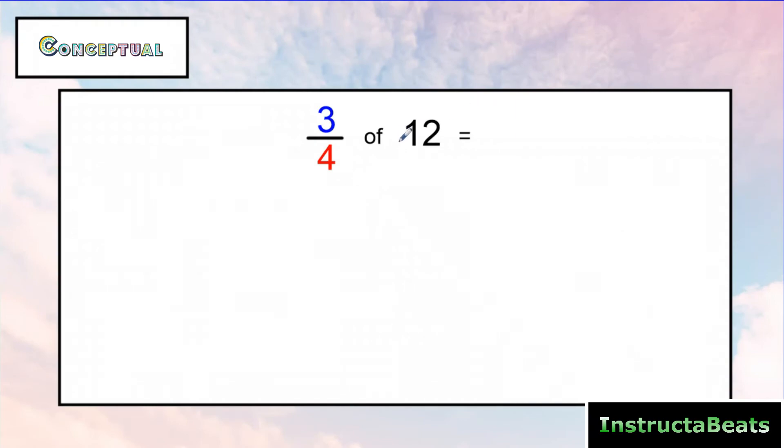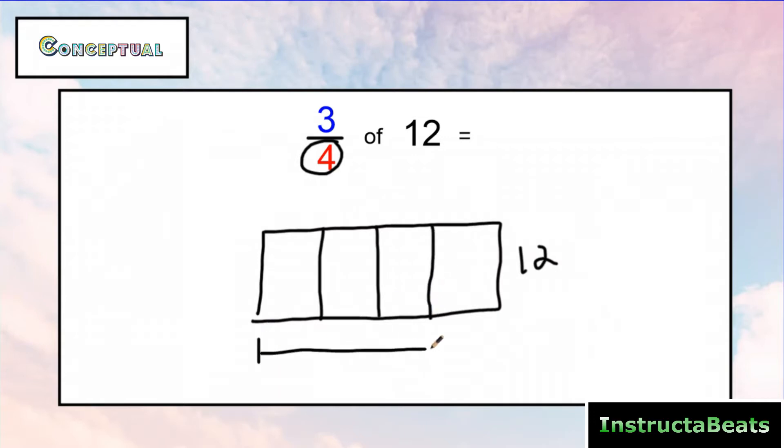So if we're finding three-fourths of 12, we like to solve this type of question with a tape diagram. So I'm going to draw my whole right here, and my whole is going to be worth 12. And I know I'm splitting it into four equal groups. And if I want to find three-fourths of that, I'm looking for three parts of that. So three of the four groups. And so now I'm just going to think about this as division. 12 divided by four is going to be three.